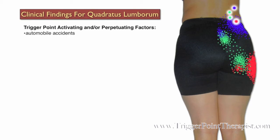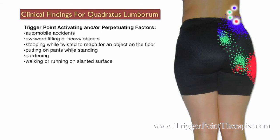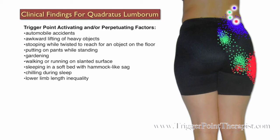Some factors that may activate or perpetuate trigger points in the quadratus lumborum muscle include automobile accidents, awkward lifting of heavy objects, stooping while twisted to reach for an object on the floor, putting on pants while standing, gardening, walking or running on a slanted surface, sleeping in a soft bed with a hammock-like sag, chilling of the muscle during sleep, and lower limb length inequality where one leg is shorter than the other.